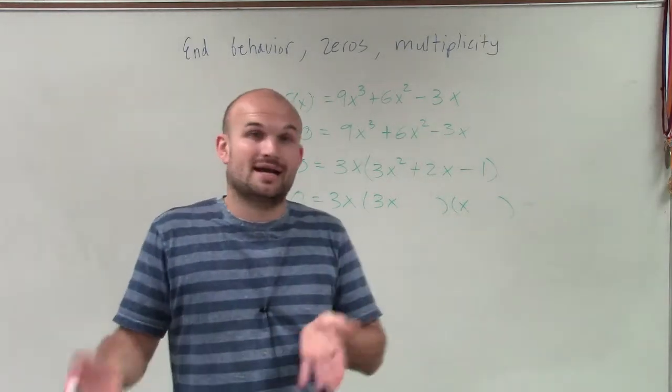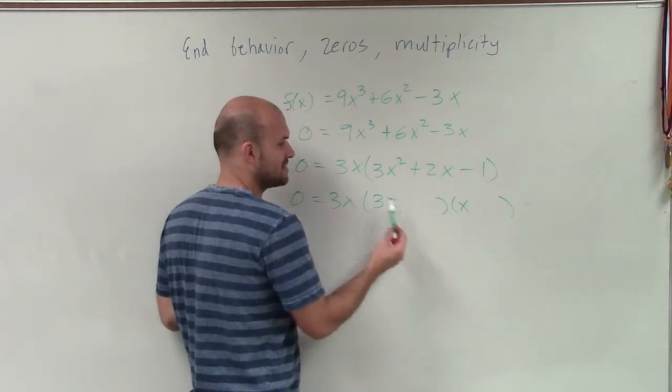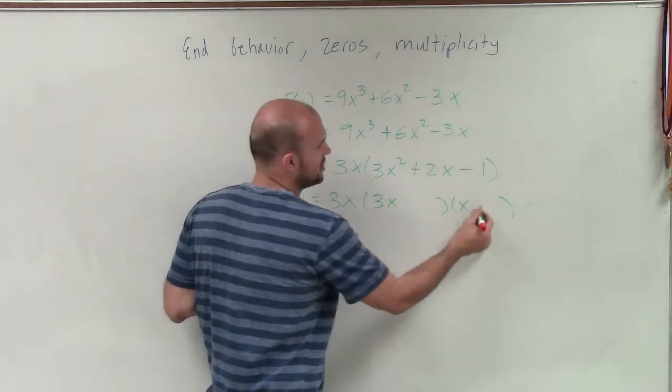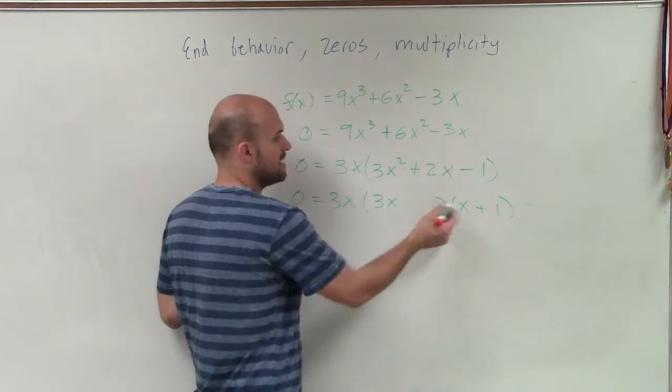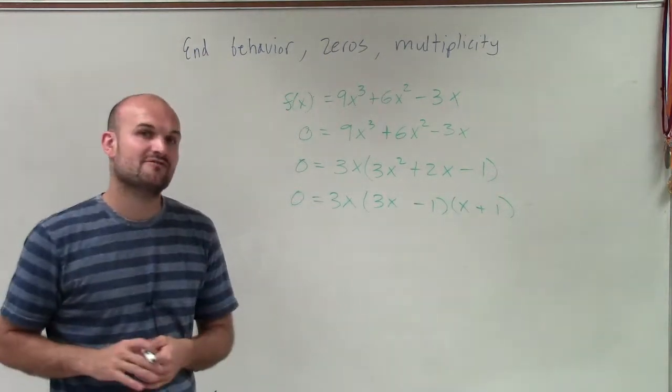Well, it has to be a positive 1 and a negative 1. But then they have to add to give me a positive 2x. So that means I know that my 3x has to multiply by a positive 1, and my x has to multiply by a negative 1. Therefore, you can see that's going to be my factored form.